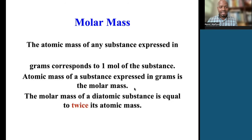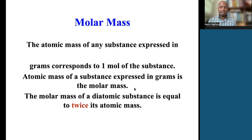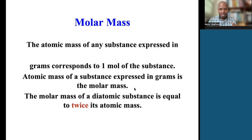The atomic mass of any substance expressed in grams corresponds to one mole of the substance. The atomic mass expressed in grams is known as the molar mass — it's the mass of one mole of a substance. For a diatomic substance like oxygen, find the mass in the periodic table and multiply by two. Anything ending in -ine or -gen is a diatomic element. One mole of hydrogen gas is 1 times 2 = 2 grams; one mole of nitrogen gas is 14 times 2 = 28 grams.